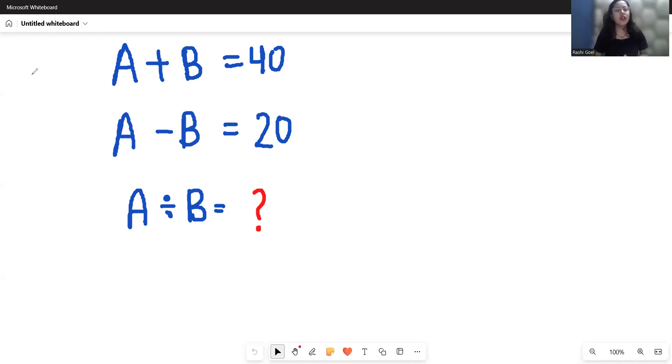Hello everyone, we have given A plus B equals 40, A minus B equals 20, then A divided by B is what?